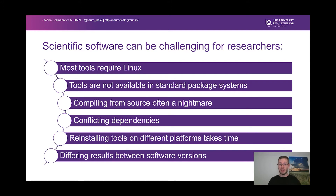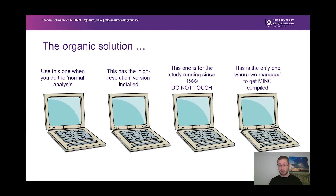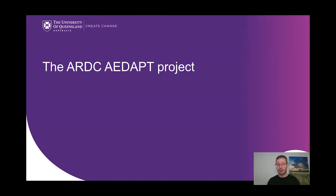As I showed, we get differing results between software versions, so we need to be able to manage our dependencies very well if we want reproducible results. The organic solution we see in many labs around the world is that people just buy different computers for different studies. This is not very cost-efficient; when hardware fails, studies have a big problem. It's not very secure because these things are not patched very well, and this is just a nightmare for an IT department, but this is how currently science is done. So we want to change this with the ARC ADAPT project.